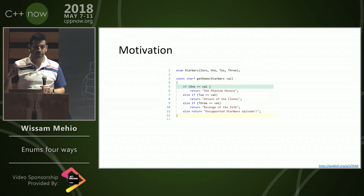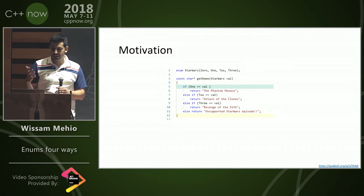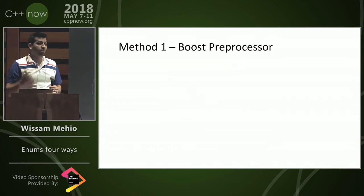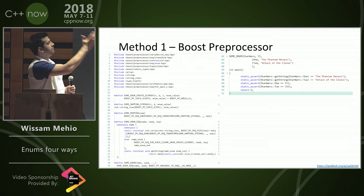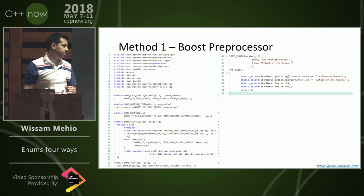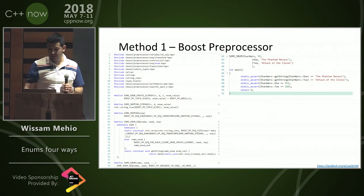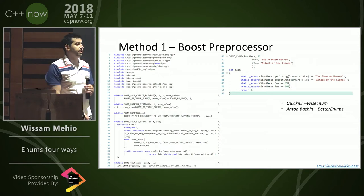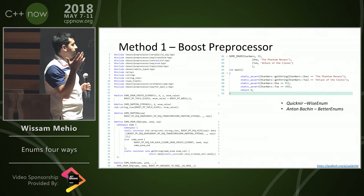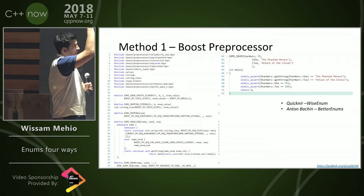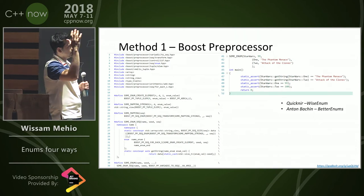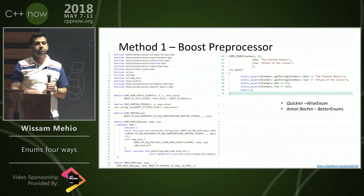We wanted to have a way to express enums that explicitly shows the developer's intent. The first method uses Boost Preprocessor — on the left is all the boilerplate work, on the right you'll see how the library would be used. This is nothing new; you might have seen this through the work of Quiknir and Anton Bakken. We adapted that work so that we end up with a std::array that has all the string values, and we can at compile time get the string value from any enum.